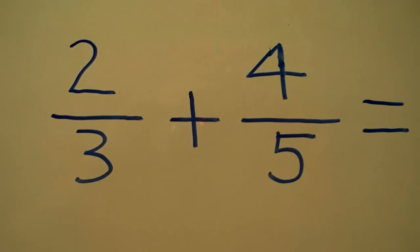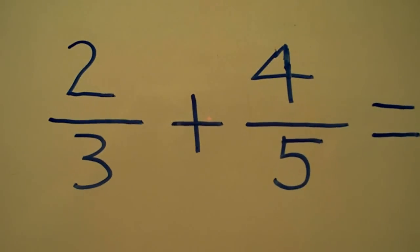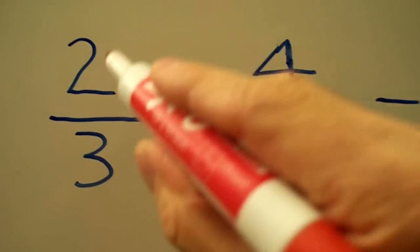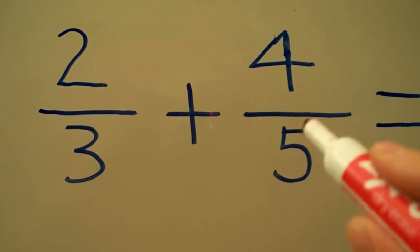In this video, we're going to be learning a shortcut way to add fractions with uncommon denominators. On the board, we've got two-thirds plus four-fifths.